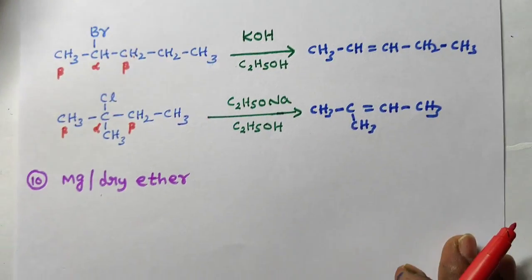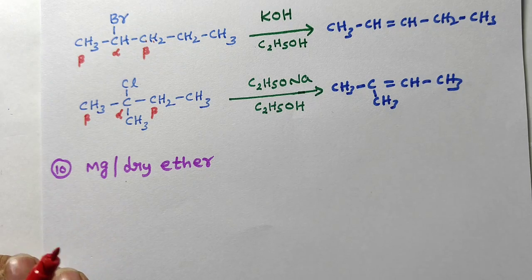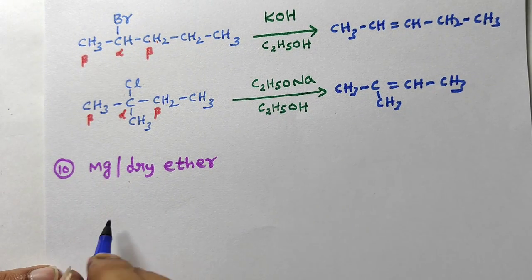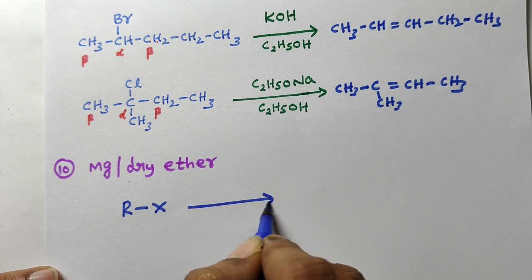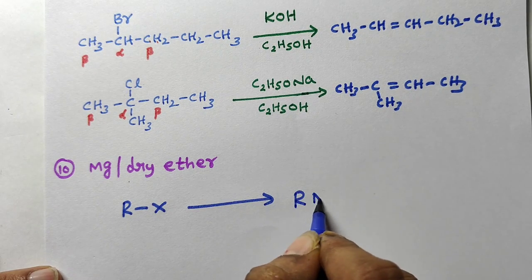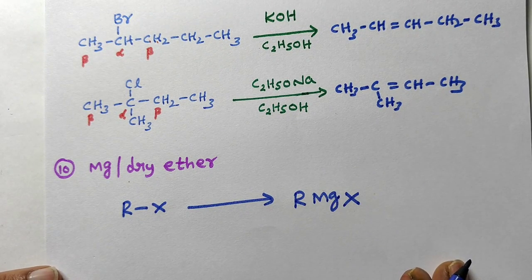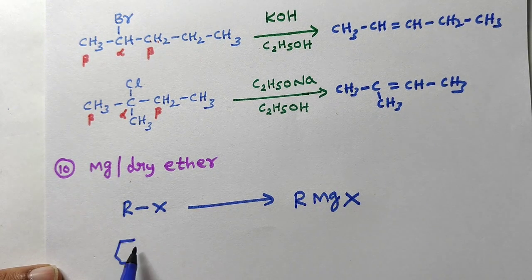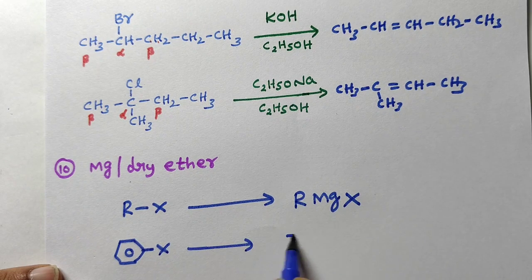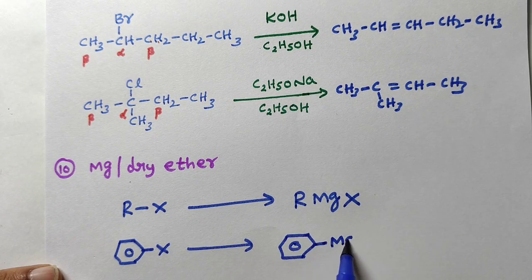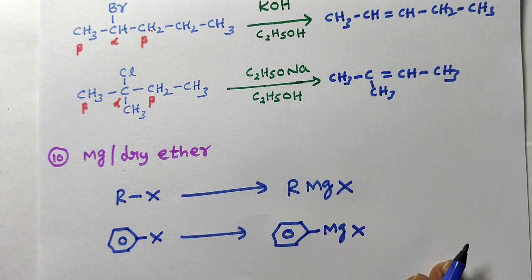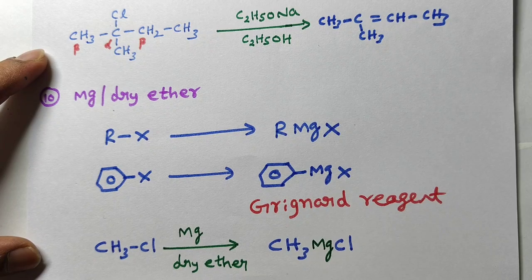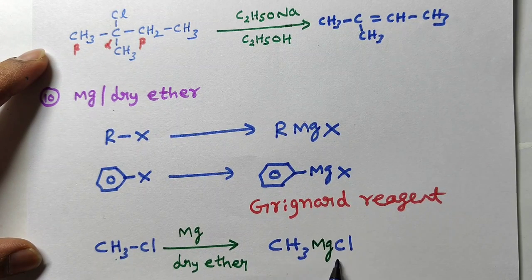Next reagent: magnesium in dry ether — also an important reaction. In this reaction, alkyl halide reacts with magnesium in dry ether to give RMgX, which is called the Grignard reagent. Magnesium is inserted between R and X. For aryl halide, you get aryl magnesium halide — phenyl magnesium halide. Both are called Grignard reagents. For example, methyl chloride treated with Mg in dry ether gives methyl magnesium chloride.